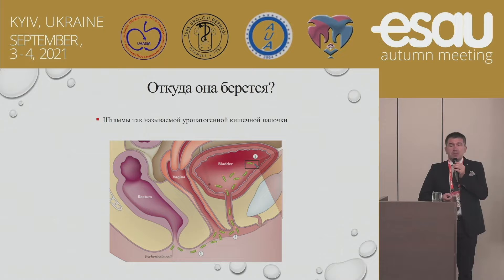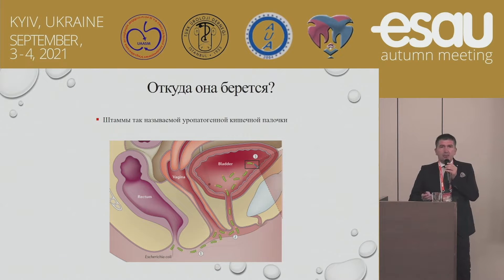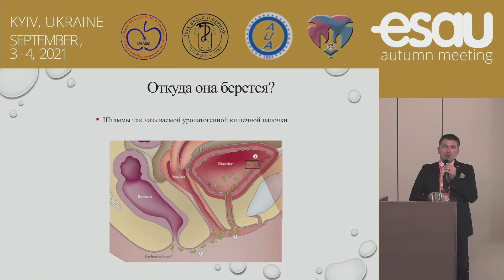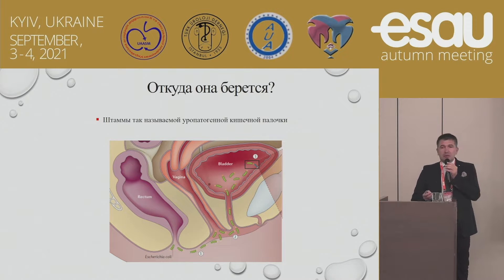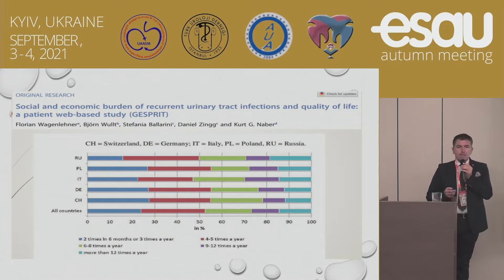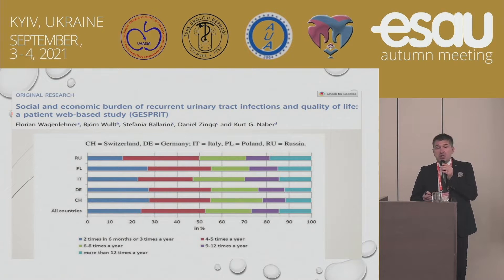We know E. coli colonizes the perianal region, then the vagina, and can move from the vagina into the upper reproductive tracts and into the urinary bladder. E. coli is highly recurrent, with incidence exceeding five episodes per year in more than half of affected females.